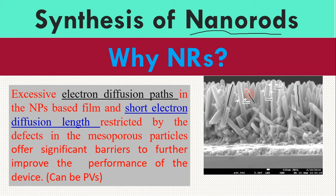It is called nano because it is in the nano range — for example, one side is in the nano range. There are also some sides below 100 nm. Now let's discuss why not nanoparticles, why not nano flowers, why not other nanomaterials, and why nanorods.